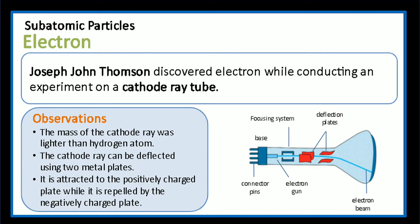Joseph John Thompson discovered electrons while conducting an experiment on a cathode ray tube. He noticed that the mass of the cathode ray was lighter than a hydrogen atom and it can be deflected using two metal plates. It is attracted to the positively charged plate while repelled by the negatively charged plate. He concluded that cathode rays are negatively charged particles.